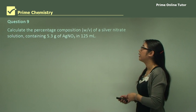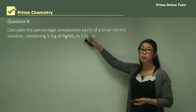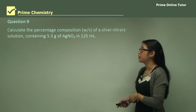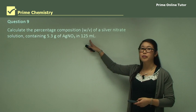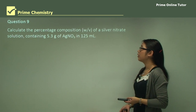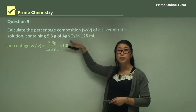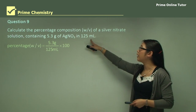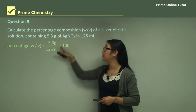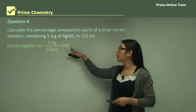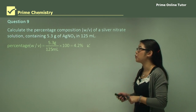Question nine: calculate the percentage composition weight-to-volume of a silver nitrate solution containing 5.3 grams of silver nitrate in 125 mils. So 5.3 grams of solute in 125 mils — since it's weight-to-volume we leave it in weight and volume — times 100% gives us 4.2%.